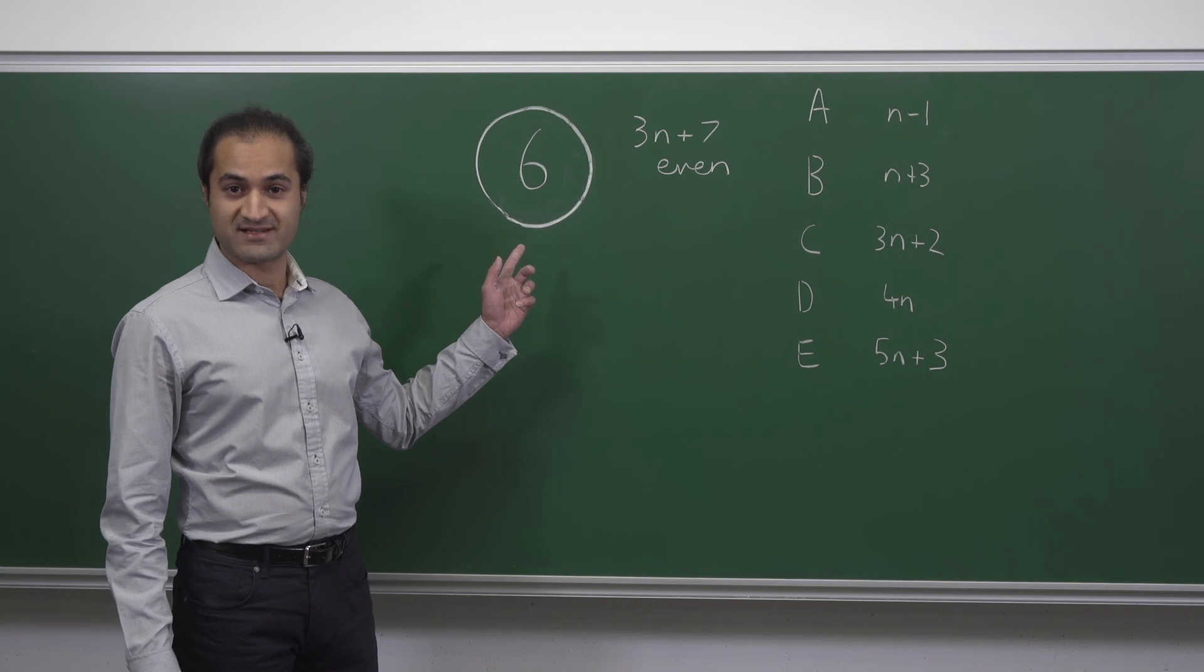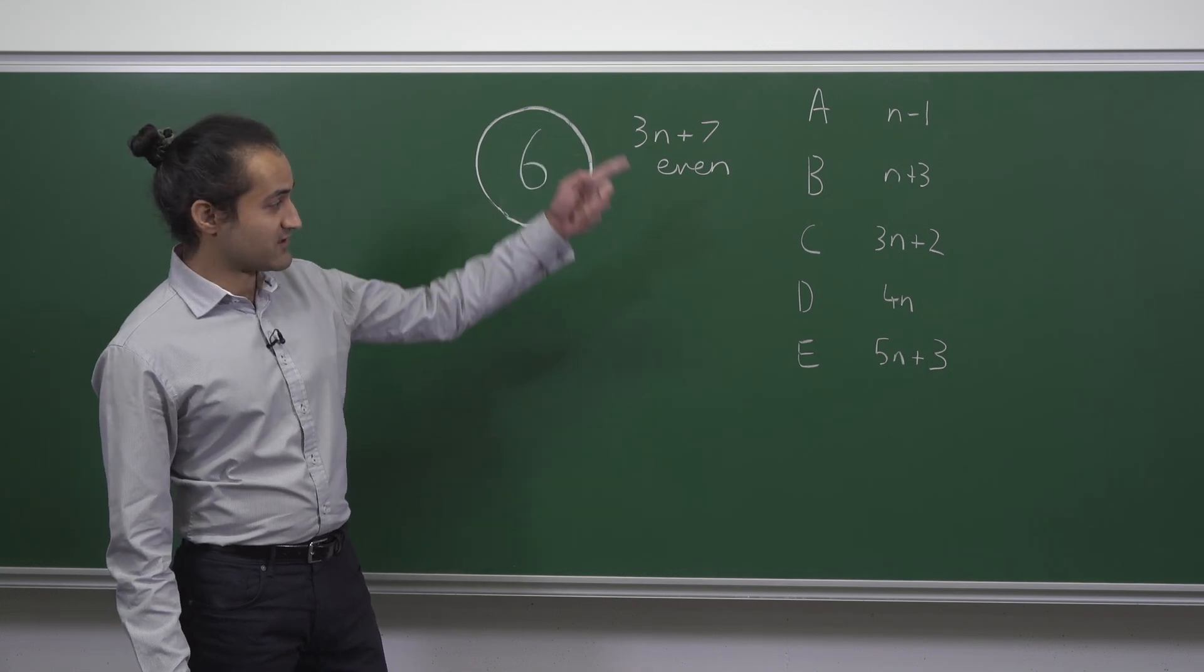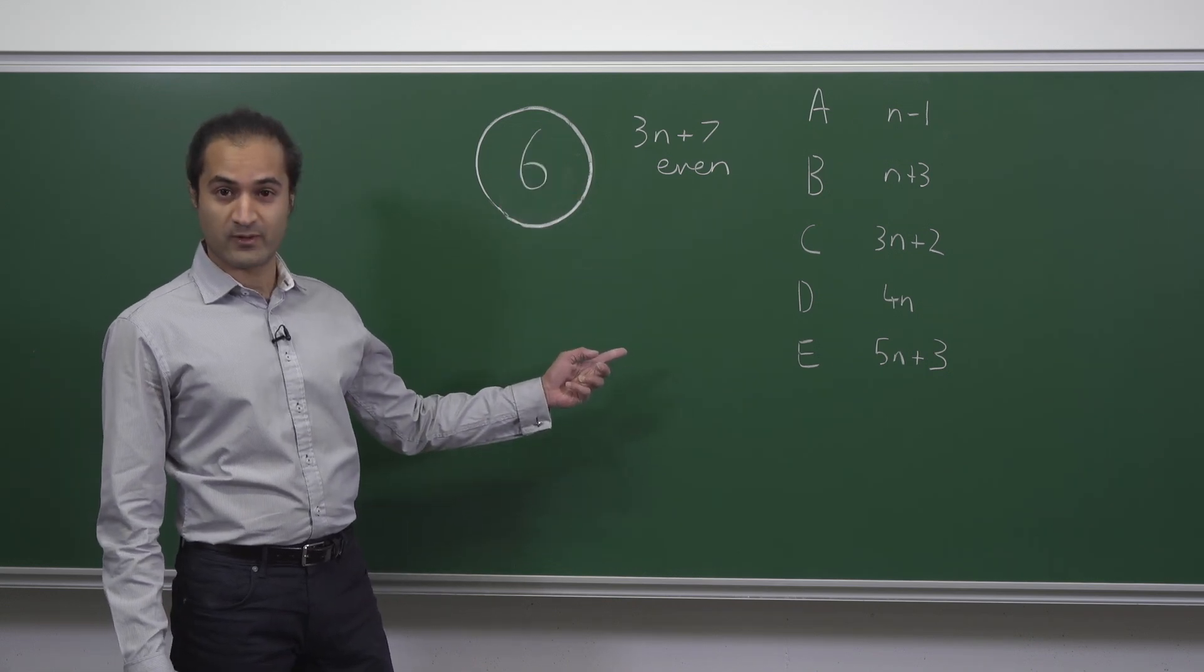Given that 3n plus 7 is even, we have to work out which of these expressions is always odd.